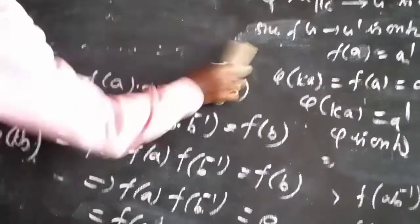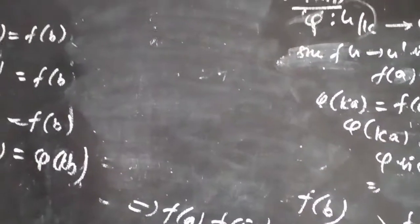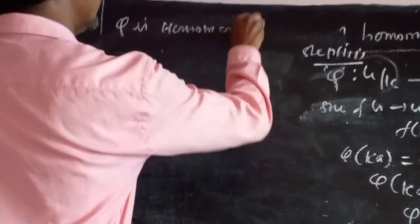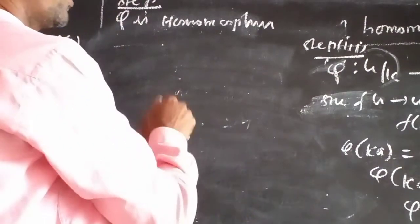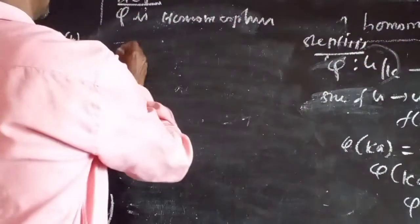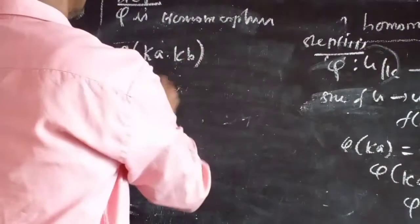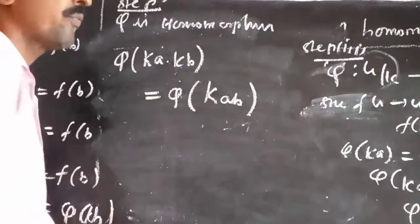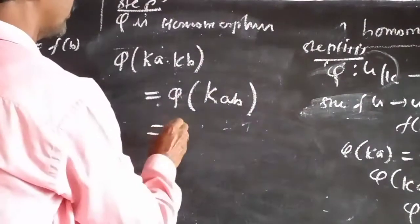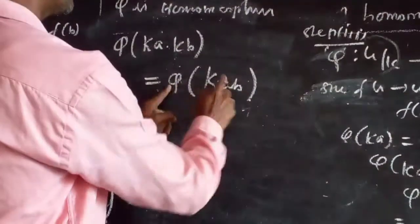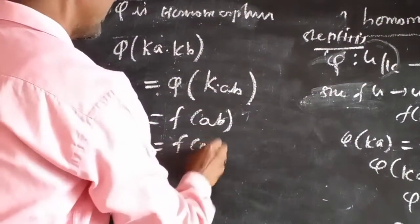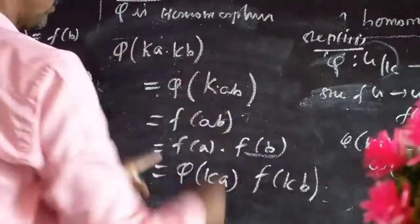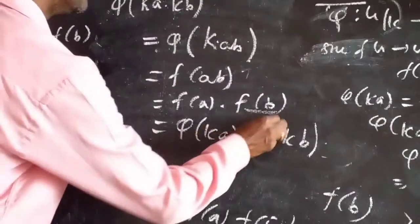Step 4: φ is a homomorphism. Homomorphism means φ(KA · KB) = φ(KA)·φ(KB). So φ(KA · KB) = φ(KAB). φ(KAB) = F(AB). Since F is a homomorphism, F(AB) = F(A)·F(B) = φ(KA)·φ(KB). Therefore φ is a homomorphism.